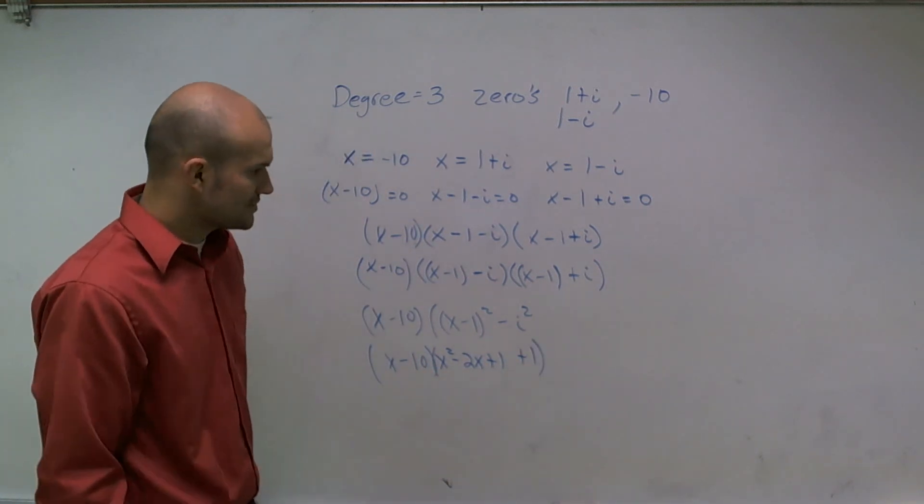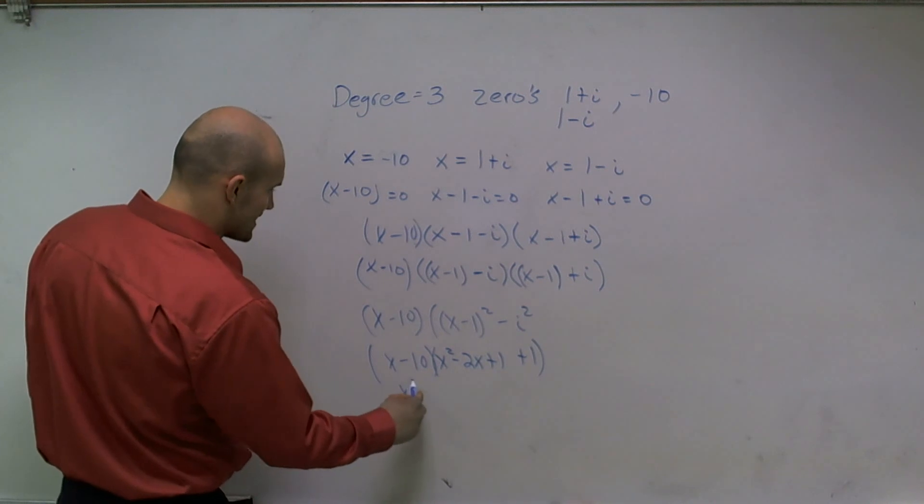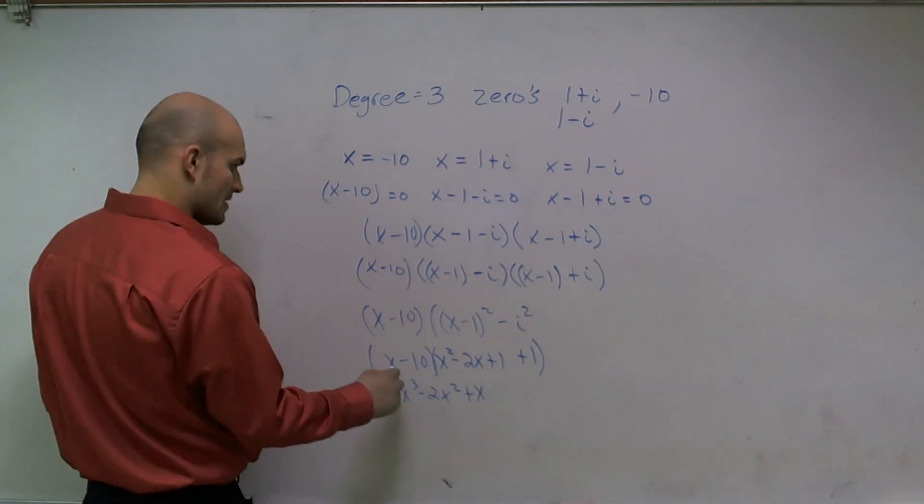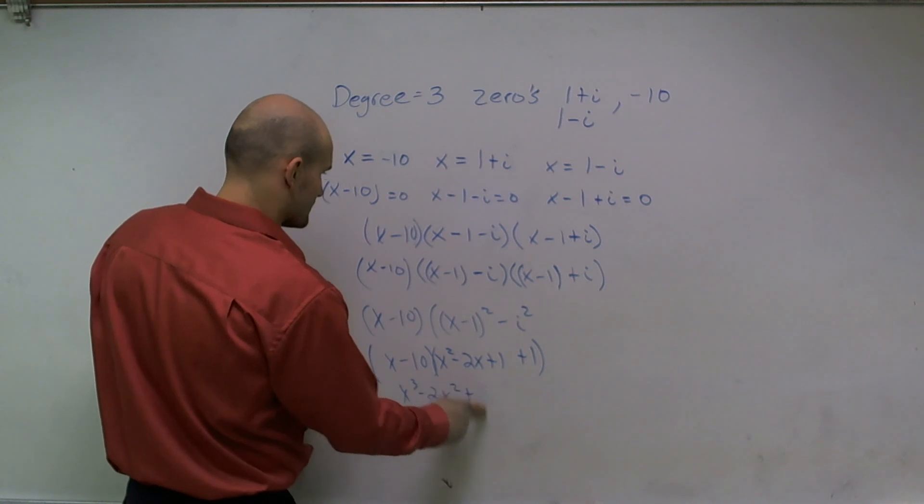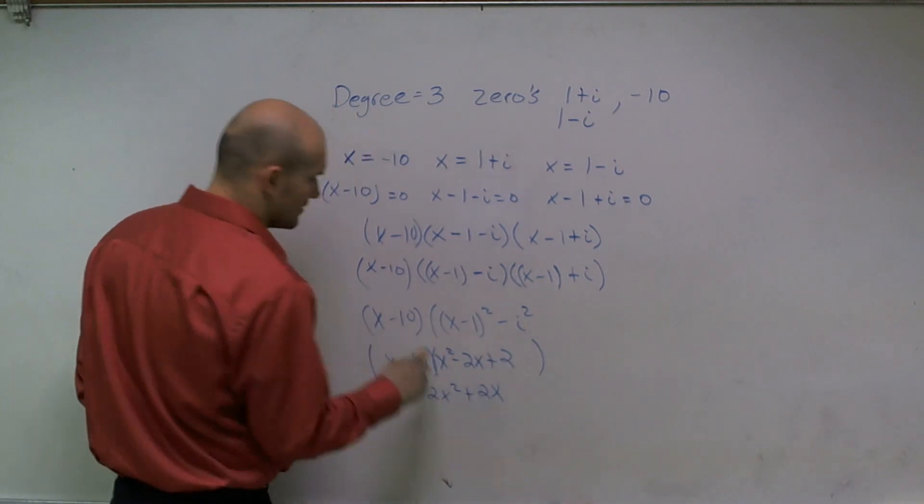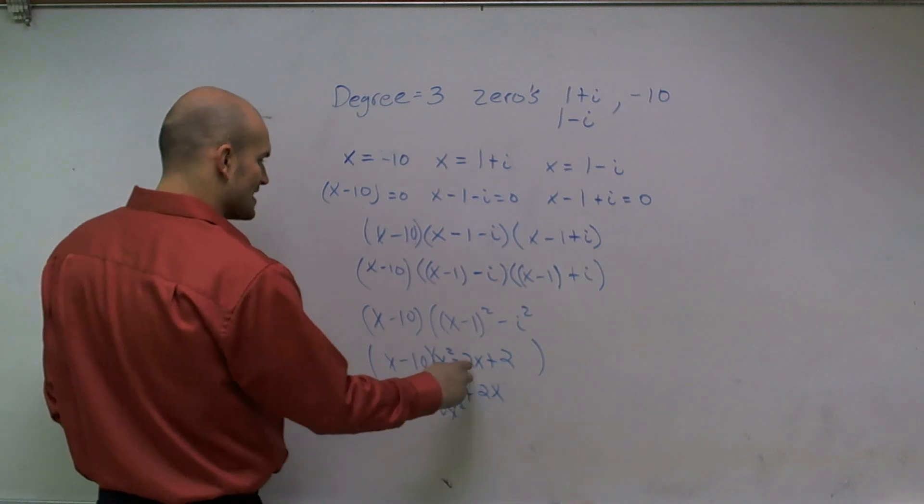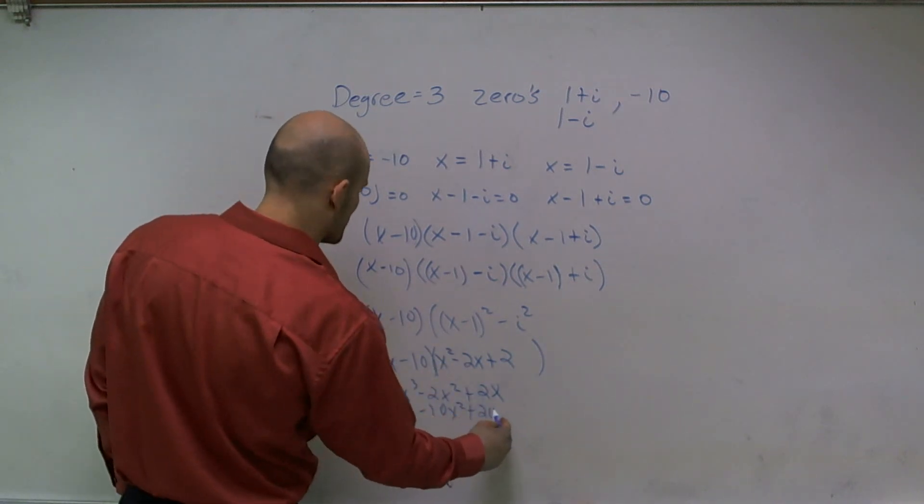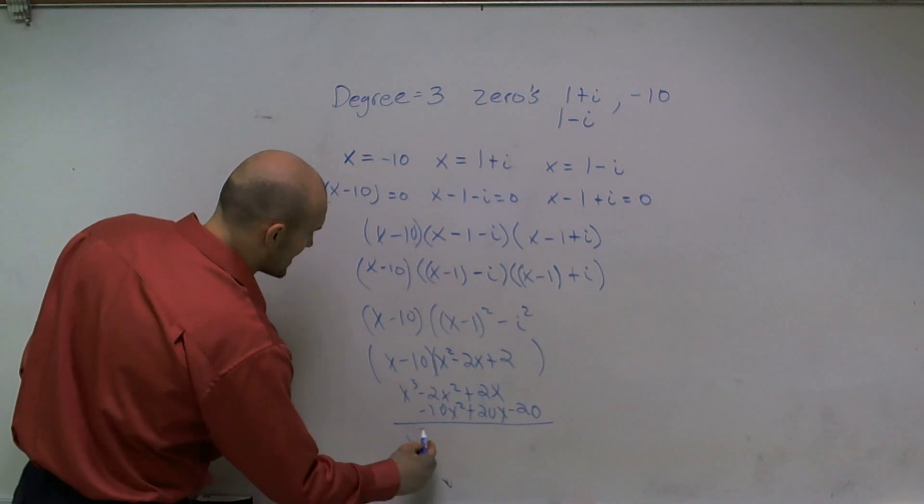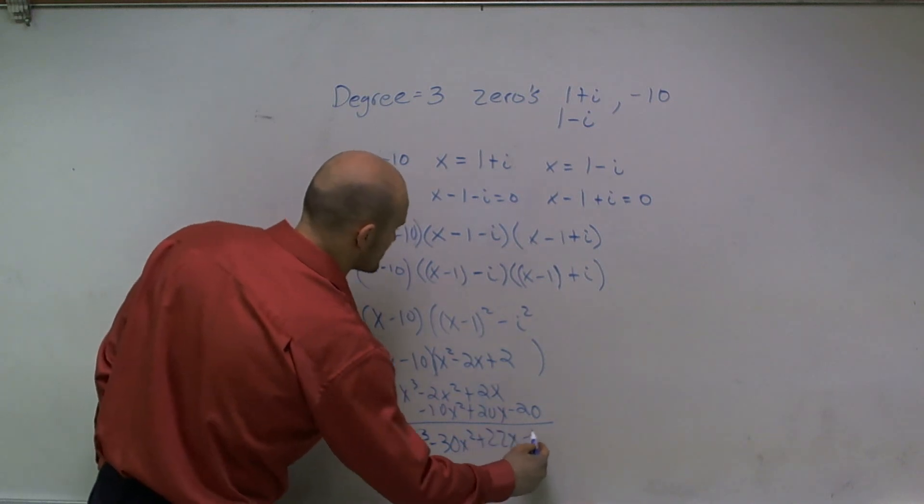All right, so now to do all this, now I'm going to have to use my FOIL techniques and multiply this out. So x times x squared is x cubed, x times negative 2x is negative 2x squared, x times 1 is x. You can combine these two to get 2 plus 2, so x times 2 is 2x. Then I multiply the negative 10. Negative 10 times x squared is negative 10x squared, negative 10 times negative 2x is positive 20x, and negative 10 times 2 is negative 20. Combine these together, I get x cubed minus 30x squared plus 22x minus 20.